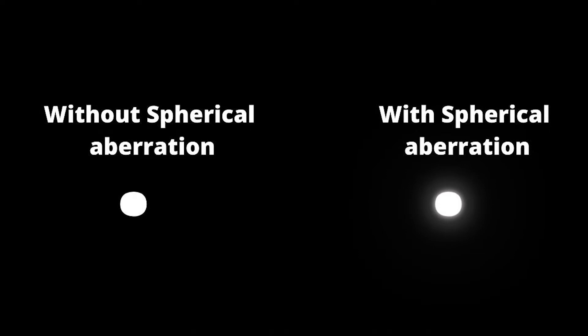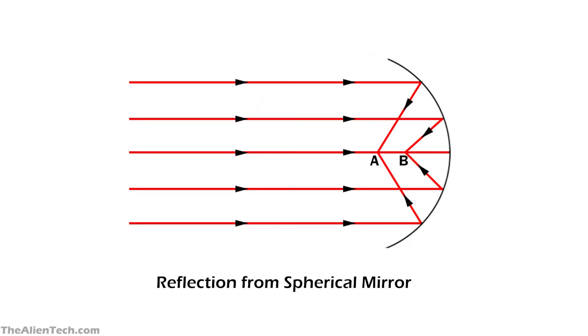When the size of the mirror increases, focusing on a single point by these mirrors gets much more difficult. So, you will see more spherical aberrations with bigger spherical mirrors.